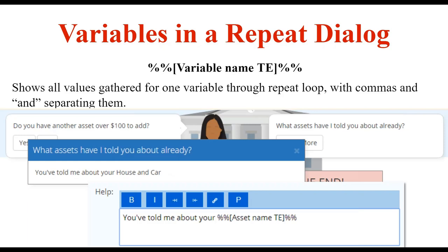You can call out all values or only one specific value from a repeat loop. To show all values gathered for a variable within a repeat loop, use the macro: double percent sign, bracket, variable name, close bracket, double percent sign — and A2J will display everything it knows about that variable. For example, on the "do you have another asset over $100 to add" question, a learn more could say "what assets have I told you about already?" and using that macro it would display: you've told me about your house and car; then house, car, and jet ski; then house, car, jet ski, and boat. A2J automatically puts in the commas and the word "and" separating the different indexed values, so you don't have to worry about the grammar.